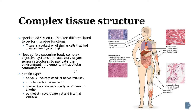Why do we need all these different tissue types? Think about how complex we are. As we get more and more complex in the animal kingdom, the need for more tissue types increases. Certain tissues are needed for capturing food, depending on diet; different digestive and accessory organs; how they move in the environment, how they adapt, and how they communicate with each other — all of these require different types of tissues.